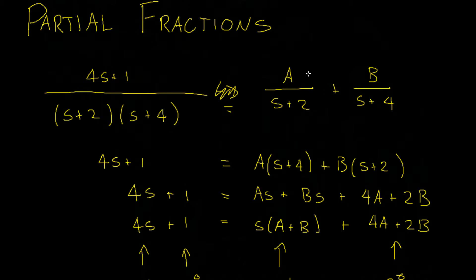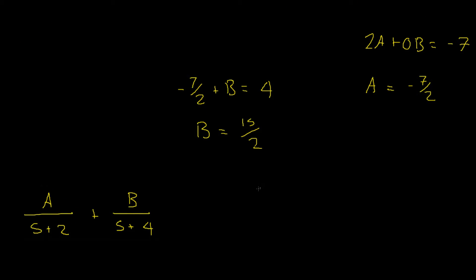We can then use our original equation, sub in our values, and we've got our final answer. We'll write our B term first, which is simply 15 divided by 2 over s plus 4 plus negative 7 halves, so it would become minus 7 over 2 divided by s plus 2. And we have our final answer.